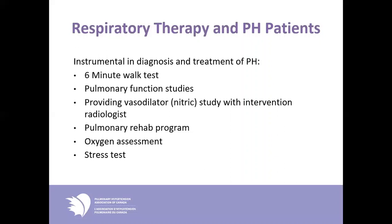Pulmonary function studies are really important. They do a spirometry, look at your lung capacity, and also a diffusion test — which is really important because it lets the specialist know how well your oxygen is being diffused into your bloodstream. The diffusion test and what we call an FEV1 or FVC are two really important tests often done before your follow-up in the pulmonary hypertension clinic. As well, respiratory therapists play an important role in what's called a vasodilator or nitric oxide study, which often takes place in interventional radiology. The nitric oxide is a vasodilator and at the same time they do a right heart catheterization, looking at different pressures in your heart and pulmonary artery. This test lets the doctors and specialists know if you responded during the study.